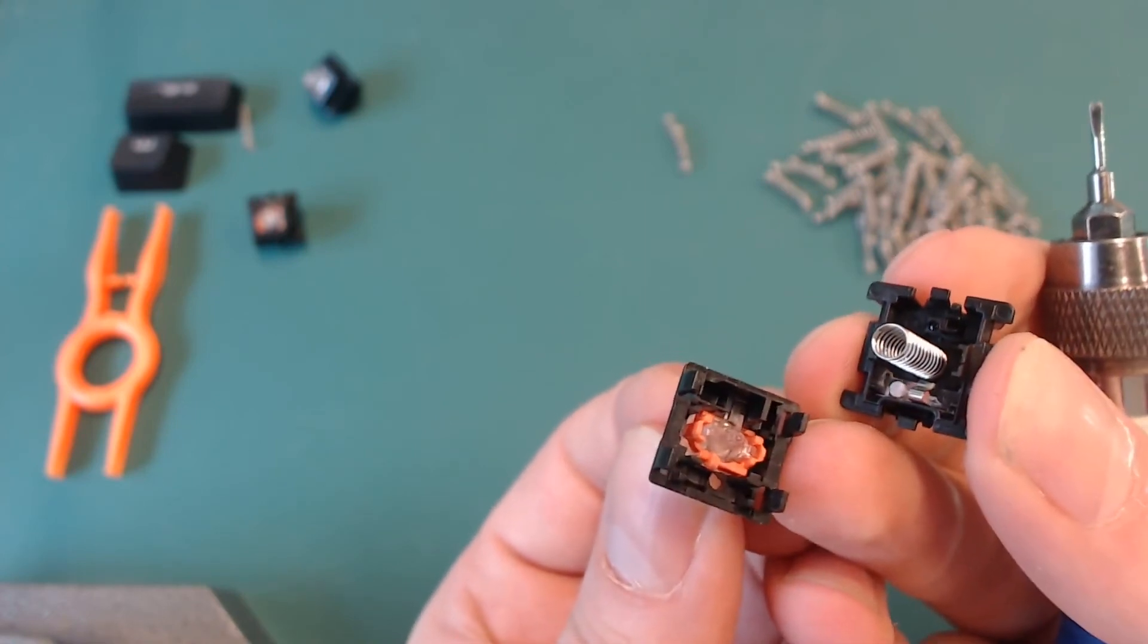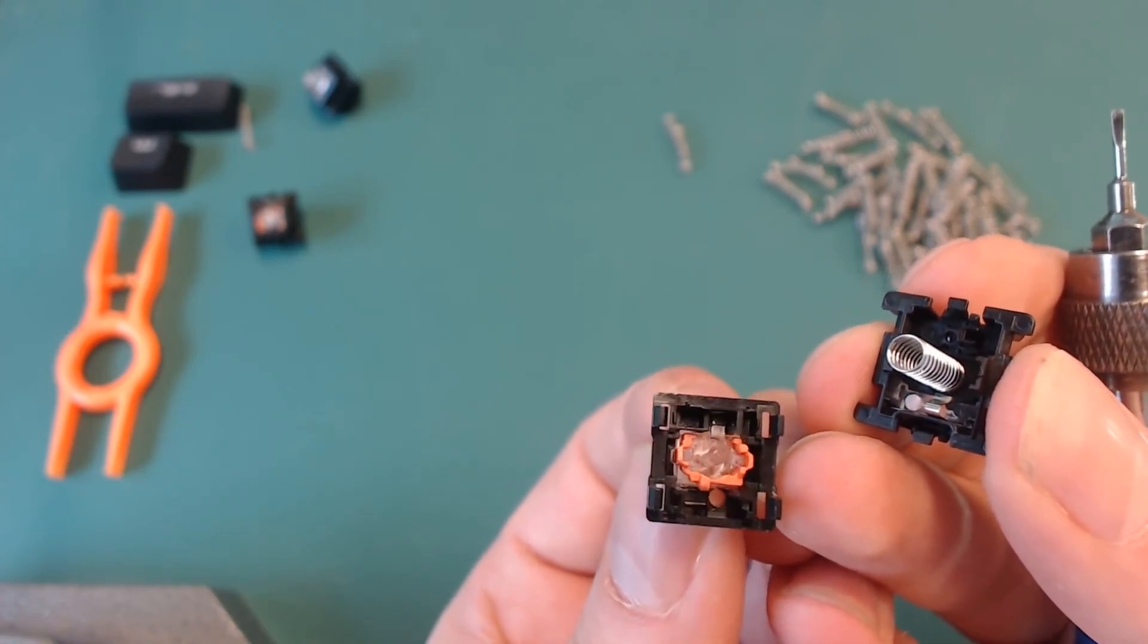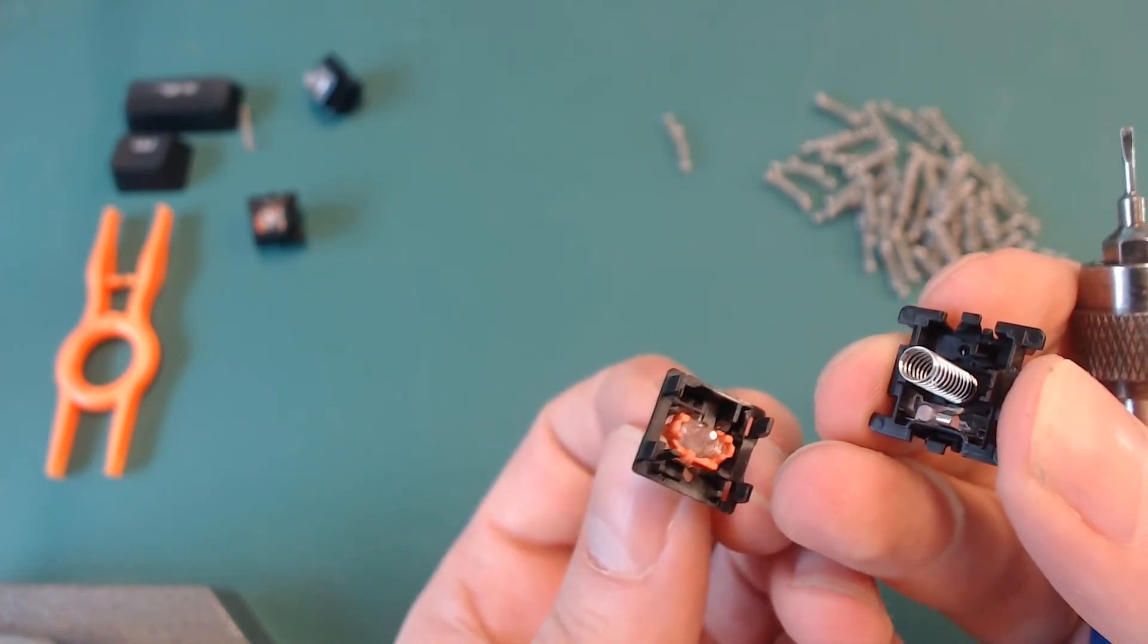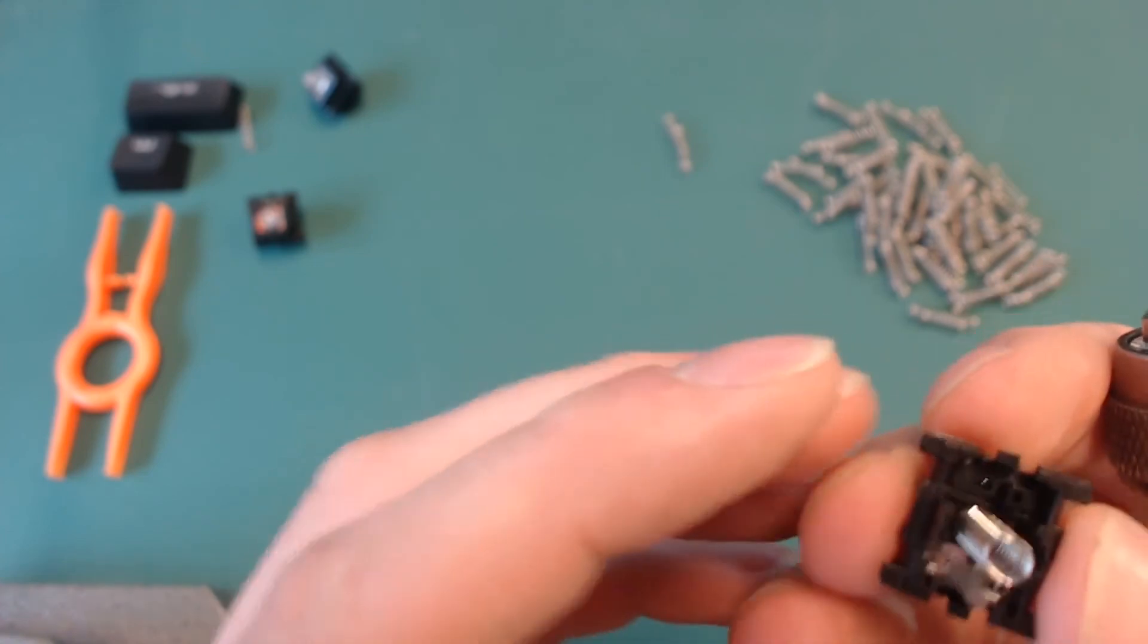As you can see there's an orange plastic thing around the stem. That should never come off. It's very tight on it and you won't have any issues with it. Just put that aside.